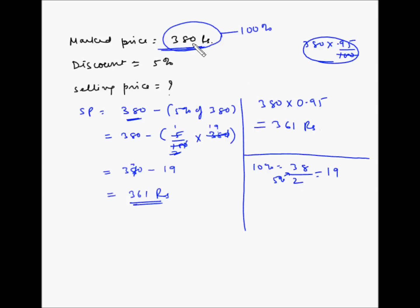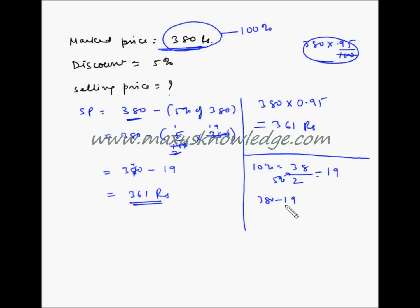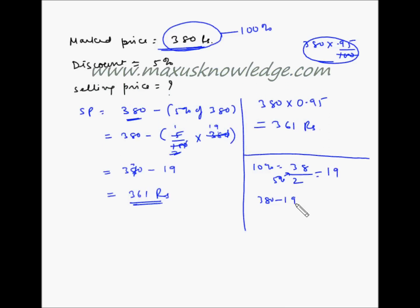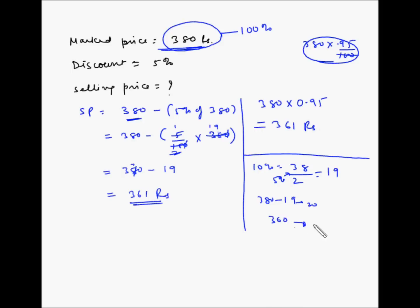So 5% of 380 is 19. You subtract 19 from 380. You can also round 19 up to the nearest easy number, which is 20. Subtract 20 from 380 to get 360, then add back 1 to get 361. So 361 rupees is the selling price.